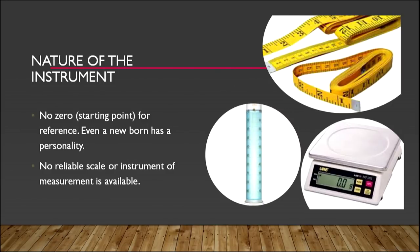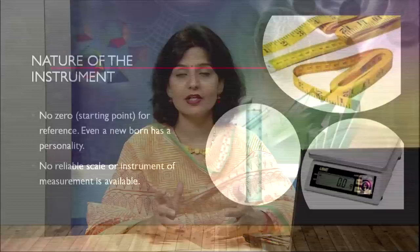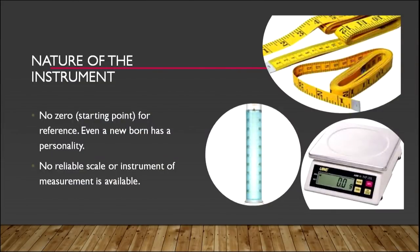Even a newborn baby has some personality — when a newborn comes to the family, you try to recognize who the child resembles. So there is no zero personality and no reliable scale. As you can see on the screen, there is a balance, a meter scale, and a measuring cylinder — each has a zero mark. If you buy cloth, you know this is zero and you measure from there. But for personality, there is no such measuring instrument.